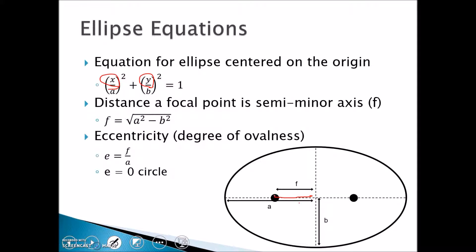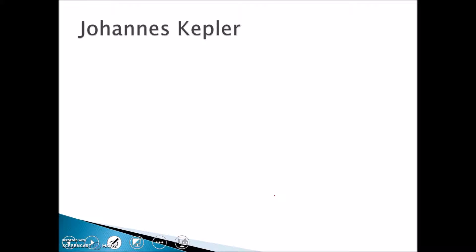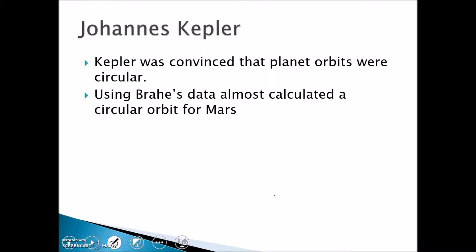Johann Kepler was convinced that the planet orbits were circular. This goes back to Aristotle who said it was a geocentric universe with Earth at the center. He said that all the planets' orbits were perfect in perfect shape, which means they were perfectly circular. Kepler believed that these planet orbits were circular, so he tried to fit Brahe's data into a circular model and he almost got it done.